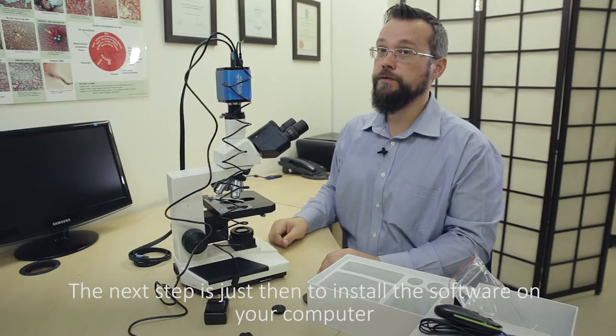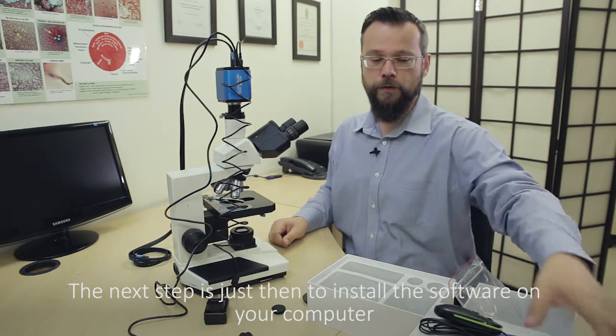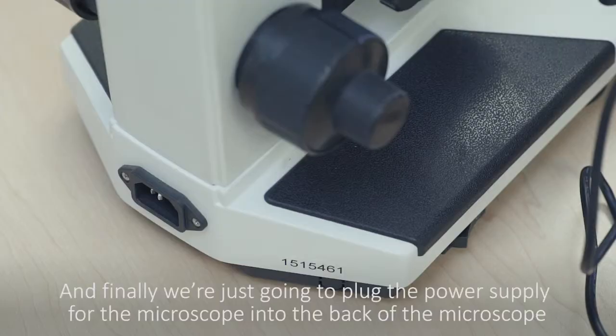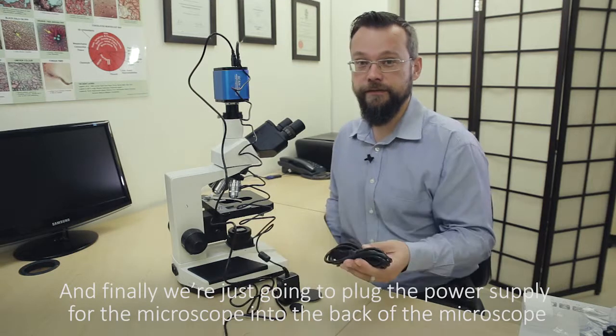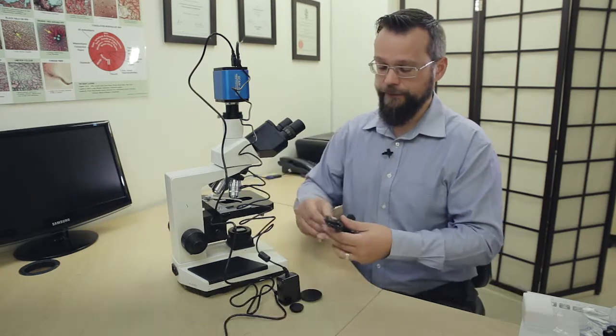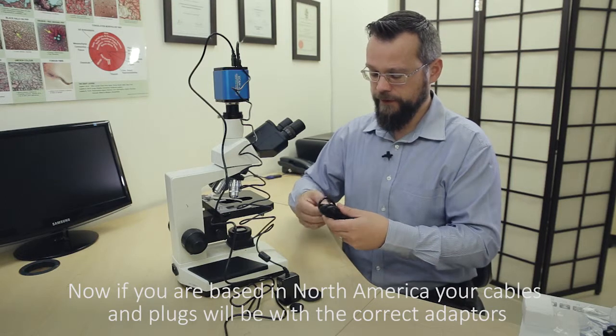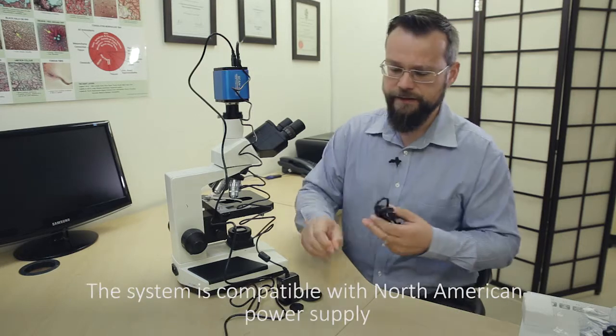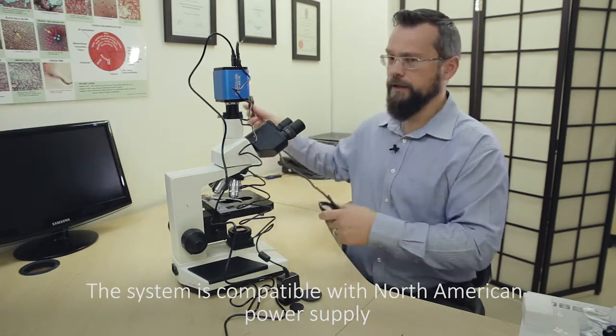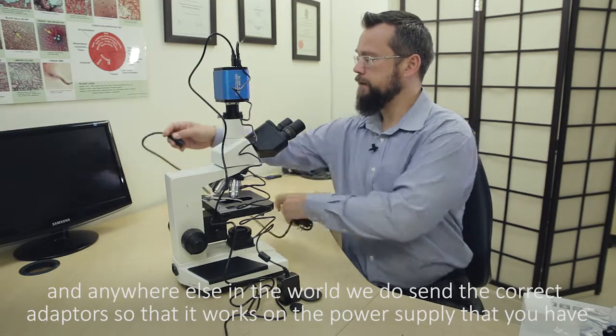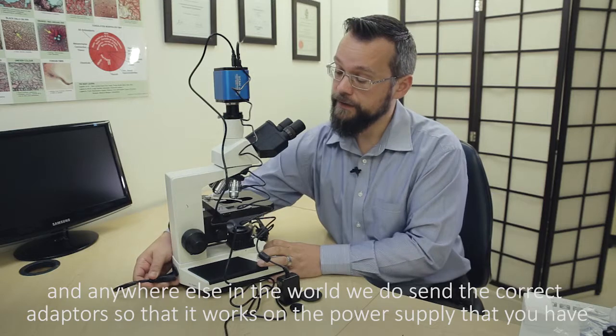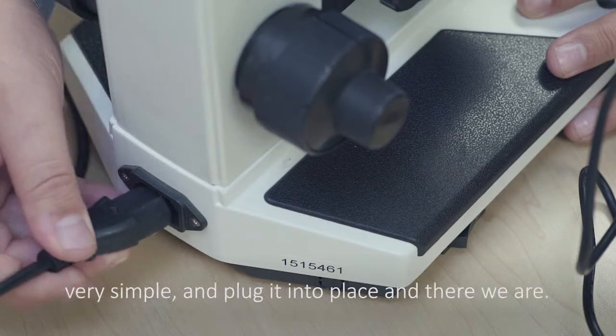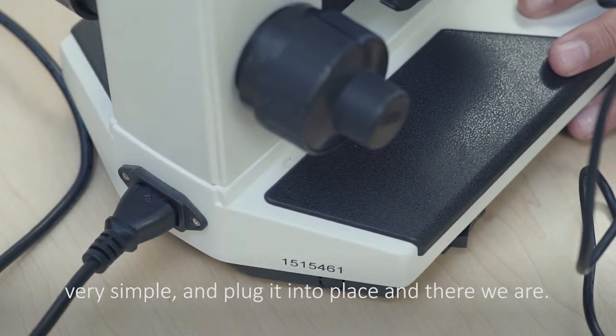The next step is just then to install the software on your computer with the disk that's provided with the camera. Okay, and finally we're just going to plug the power supply for the microscope into the back of the microscope. Now if you are based in North America, your cables and plugs will be with the correct adapters. The system is compatible with North American power supply and anywhere else in the world we do send the correct adapters so that it works on the power supply that you have. So this really just fits into the back of the microscope. They're very simple and plug it into place, and there we are.